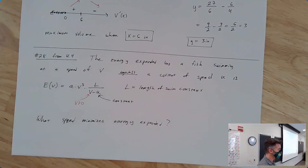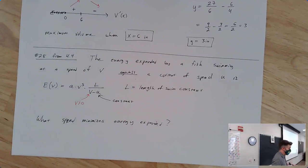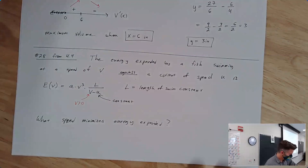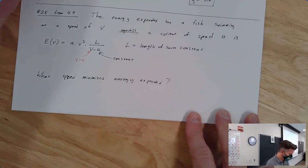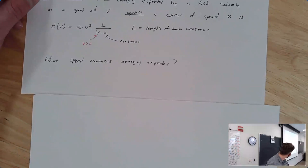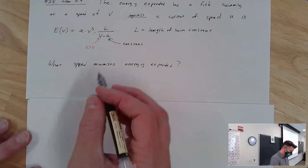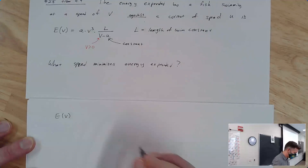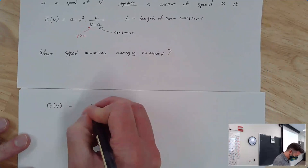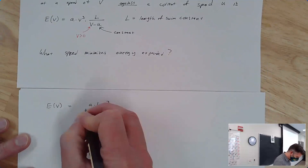There's good news here — half the battle is already done. They've given us the equation for the thing we're trying to minimize. There's no constraint to deal with, no plugging in — we just minimize it. We'll minimize the way we typically do, by taking a derivative and setting it equal to zero to find the critical value. I would rewrite this as A times L times V cubed over V minus U.